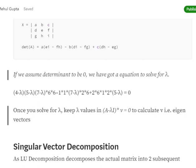If we assume the determinant for this particular matrix is 0, we get an equation in terms of lambda. Once we solve this particular equation for lambda, we will get our eigenvalues because lambda equals eigenvalues.